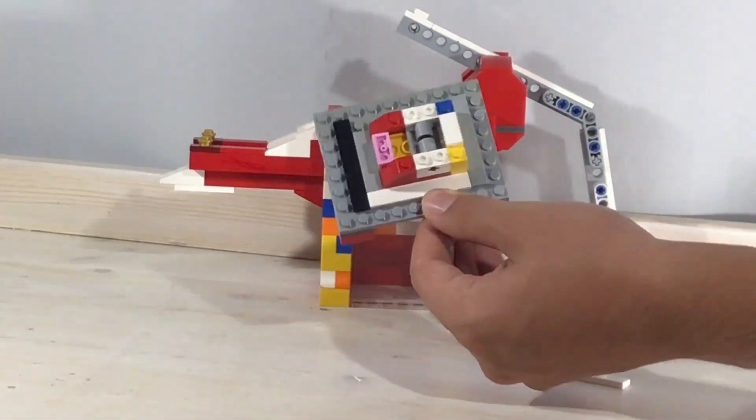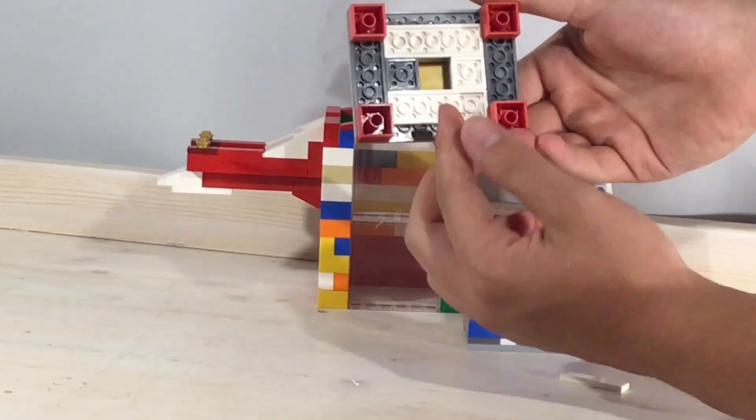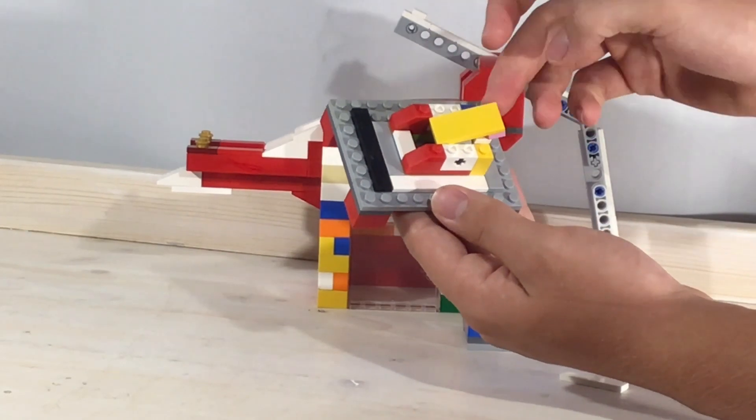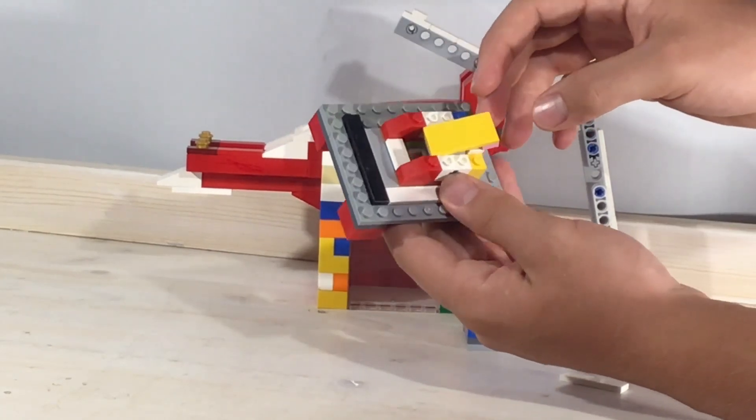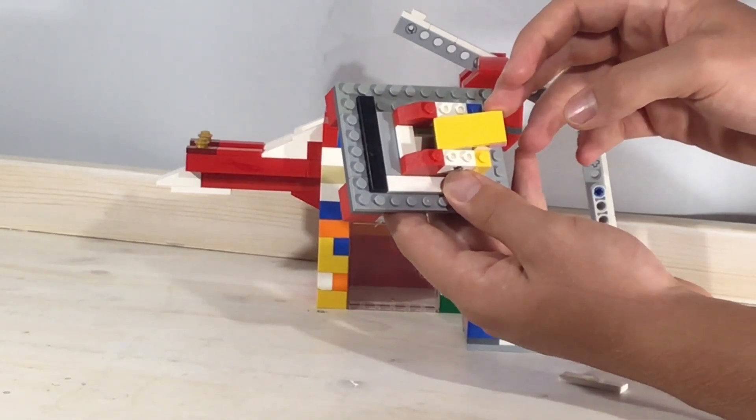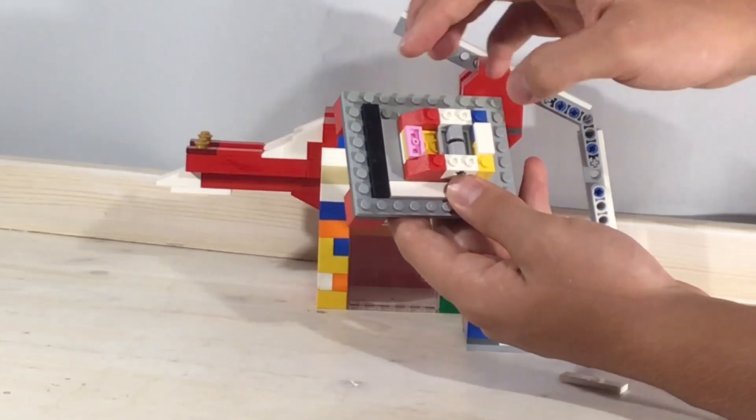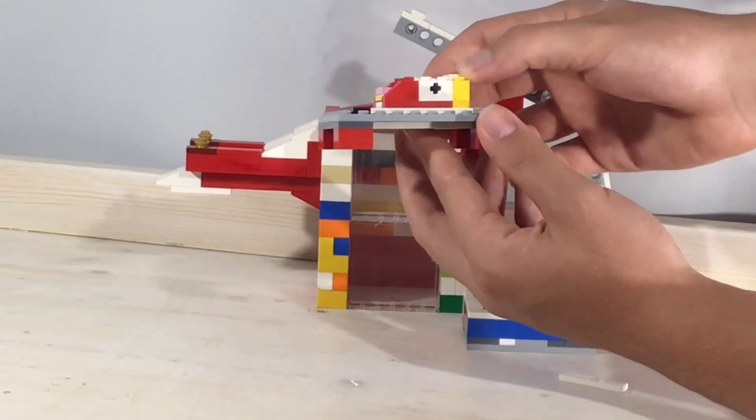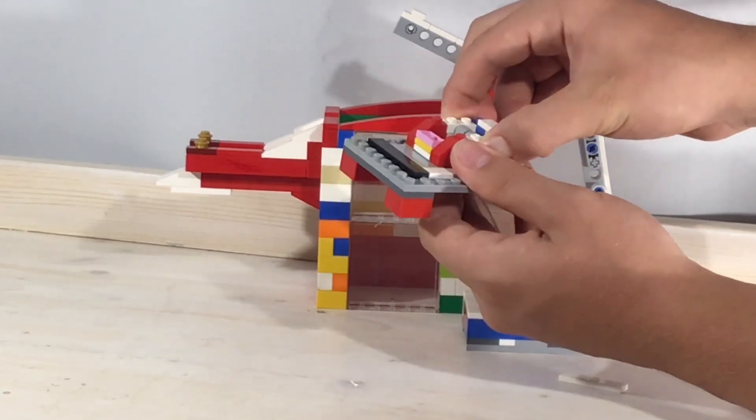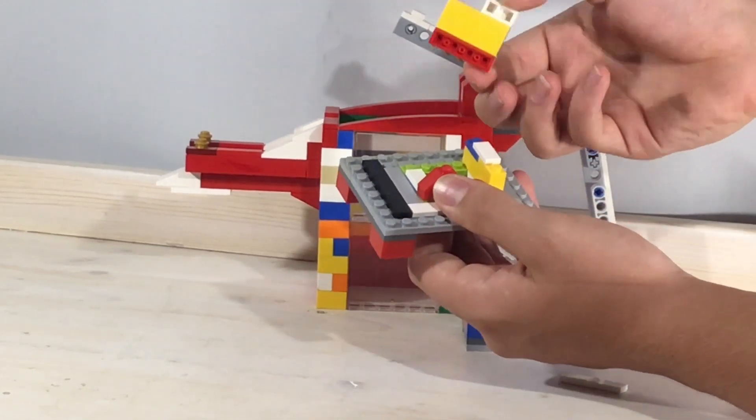The first valve is comprised of a flat bed of plates, a pole, and this valve. This valve is a 2x4 tile, the color is arbitrary, that is weighted with this 1x2 plate and is held in place with a pair of 1x2 bricks with holes and an axle.